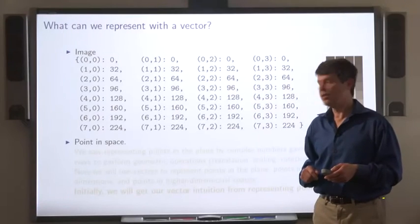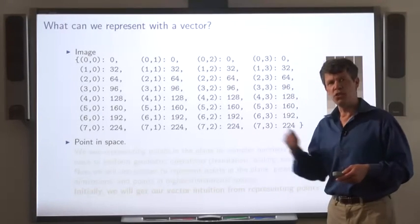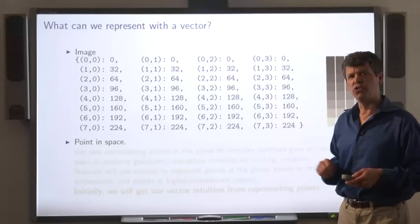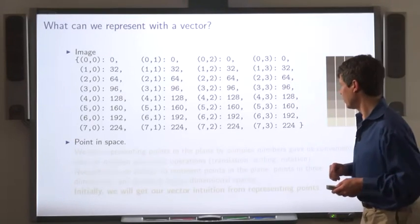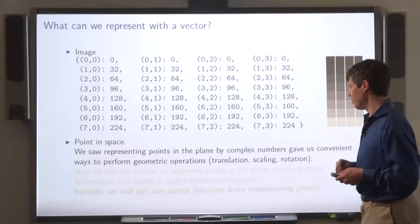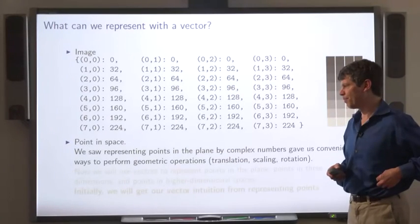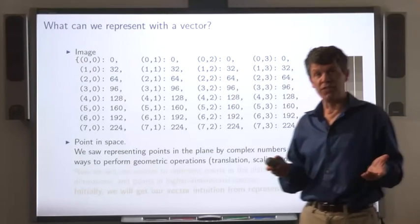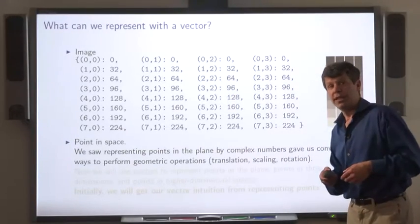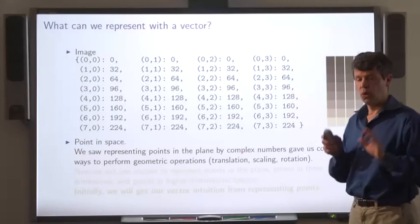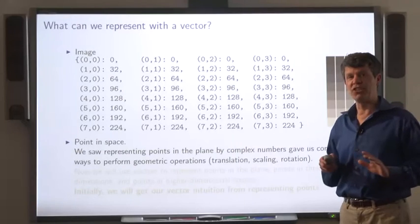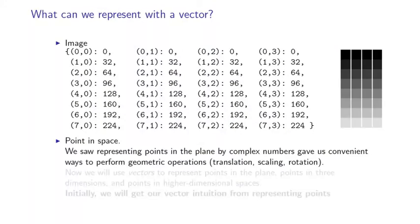We can also represent points in space. This is one of the original uses of vectors, so we'll be taking a closer look at this application. We saw that complex numbers can be represented by points on the plane in such a way that we can carry out geometric transformations in a simple way. We're going to use vectors to represent points, and we'll see how these same operations can be represented using operations on vectors.